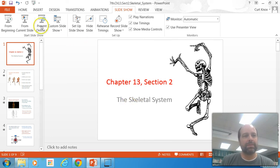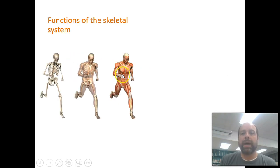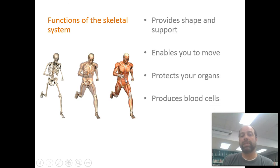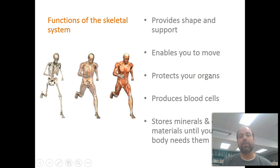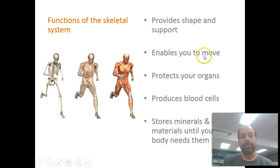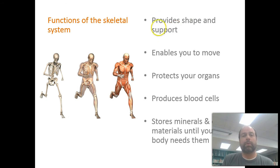The skeletal system is not only there for protection but it also does other things. Most people think it's just there to protect your organs like your brain and your heart, but it also enables you to move — muscles attach to bones and pull on them, enabling you to run, jump, and do all sorts of activity. Bones are also there for shape and support; your skeletal system gives you your structure.